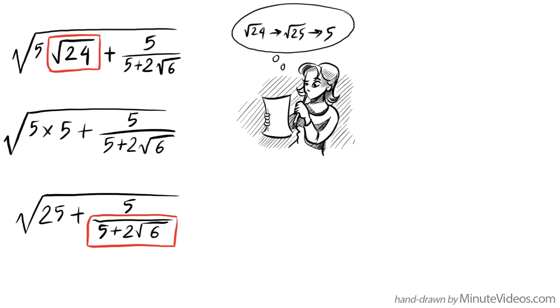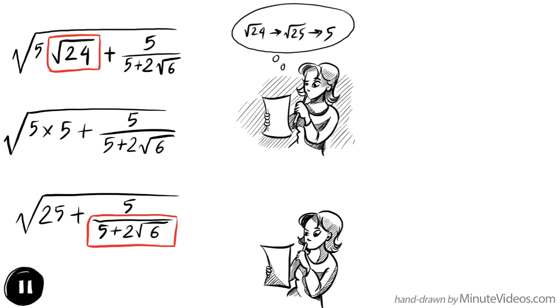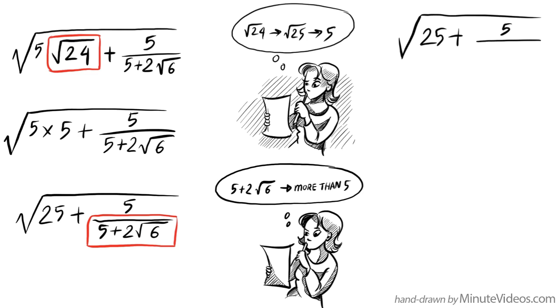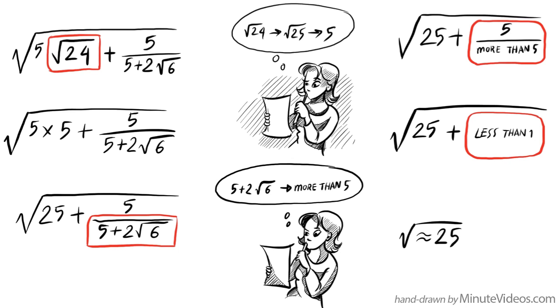Now, what about the fraction? It looks hard, but let's try. Even if we don't know what 5 plus 2 times the square root of 6 is, we do know that it's more than 5. So let's write it again and just call the denominator more than 5. And because 5 divided by anything larger than 5 must be smaller than 1, let's write 25 plus less than 1 or the square root of 25. And that equals approximately 5.